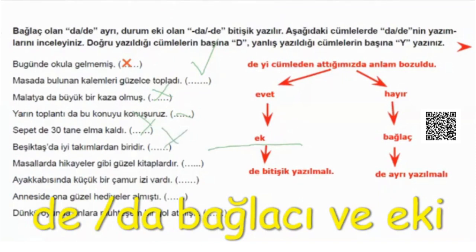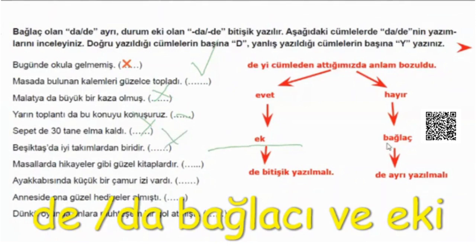Masallar, hikayeler gibi güzel kitaplardır. Evet. Anlam? Masallar... bozulmamış. Bozulmamış, yani hayır değil mi? Evet. Peki hayır olunca görevi neymiş? Bozulmazsa ayrı yazılması lazımdı. Burada birleşik yazmış. Yani bağlaçtır değil mi? Evet. Yanlış yazmış. Nasıl yazmış orada? Birleşik yazmış ama ayrı yazılmalıydı. Demek ki yanlış yapmış. Çok güzel. Devam edelim.